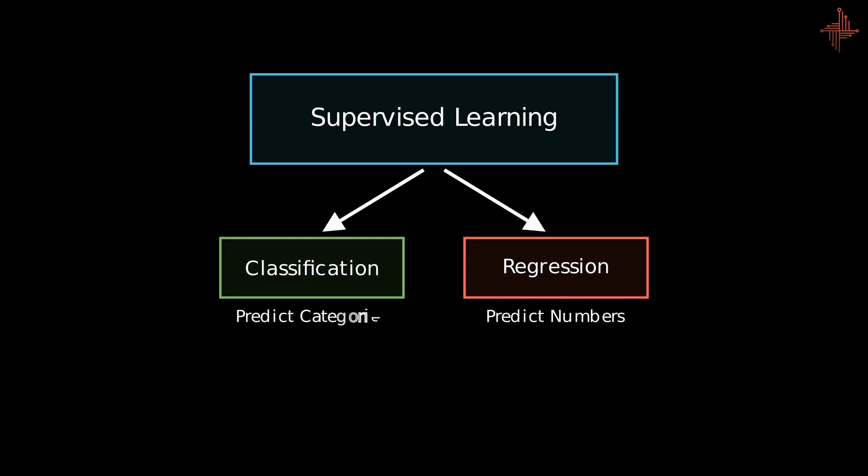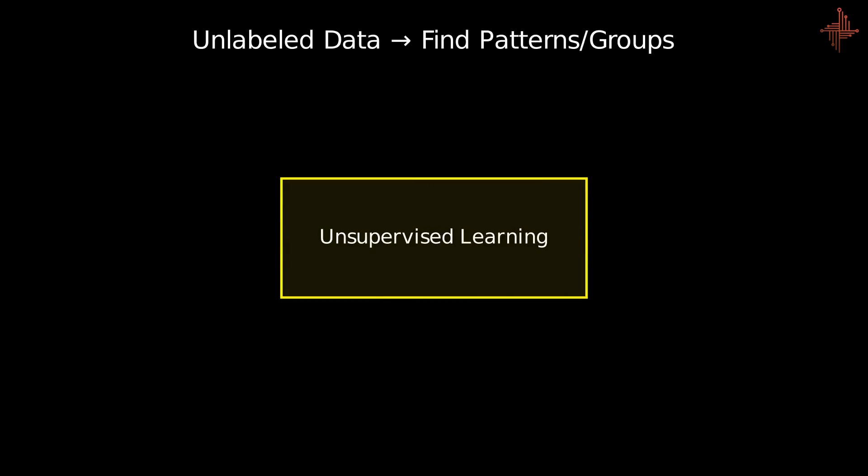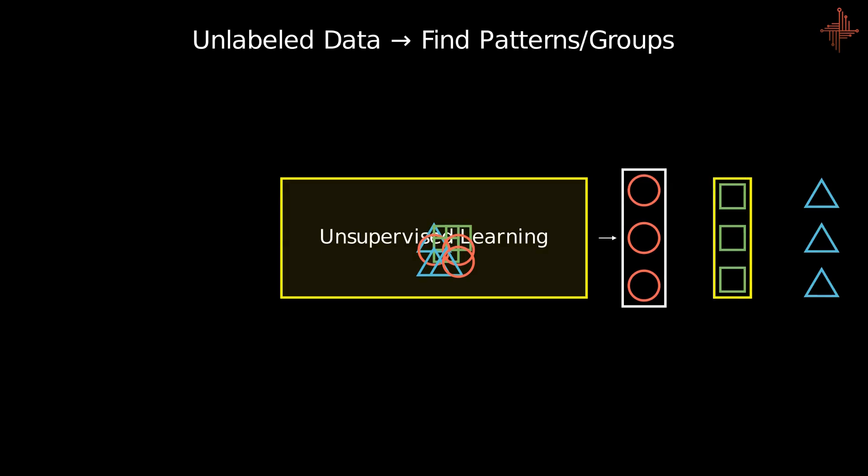Now talking about unsupervised learning, we just feed data into it without providing any labels. In other words, we only give all the x values and then the model will automatically try to find patterns in those data points. It will group similar data points together.